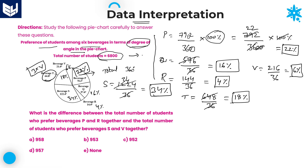This 100 percentage value is equal to 6,800 students. Therefore, 1 percentage value becomes 68. With that, we can calculate each and every question very simply.